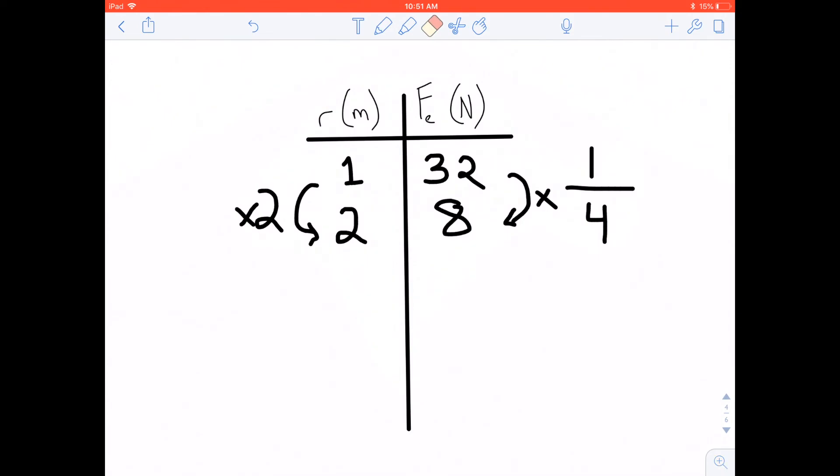So, that's what an inverse square rule shows us. Let's do it again. Let's say we double the distance. So, now we're four meters away, people. These charges are really far away.